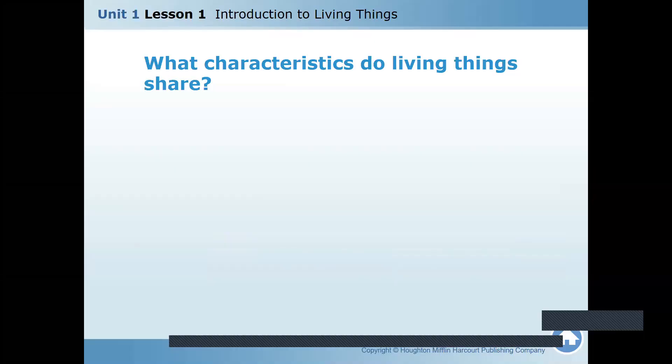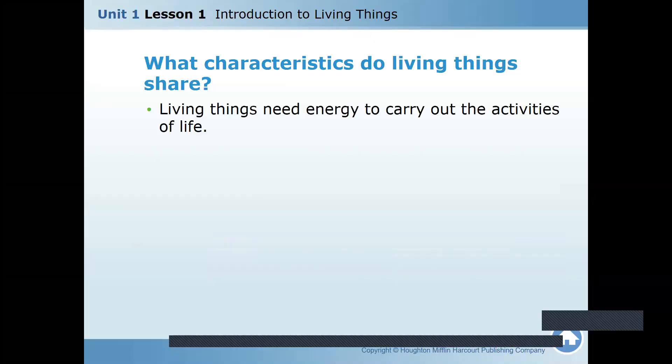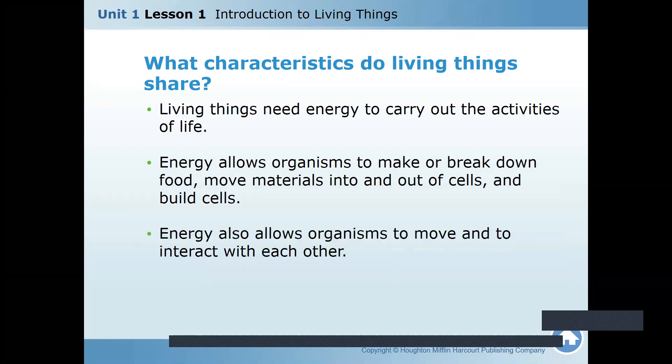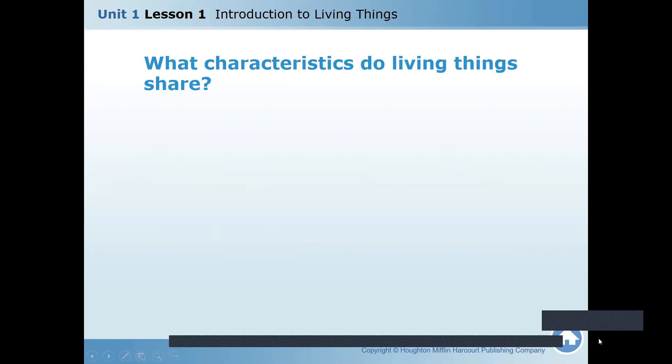Living things need to carry out the activities of life. Energy allows organisms to make or break down food. Where do we get energy from? When we eat food, it breaks down and gives energy to the cell. Plants make food from the sun and get energy, then animals get energy from the plant, then we get energy from animals. This is the food chain.